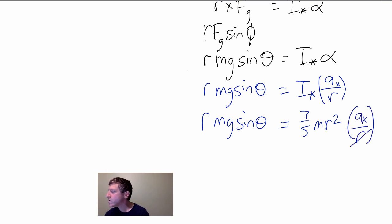And then this is AX over R. So, we get a whole bunch of cancellations. This R cancels that one. This R cancels the other one. The masses don't matter. Put the 5/7 on that side. We get 5/7 G sine theta equals AX.